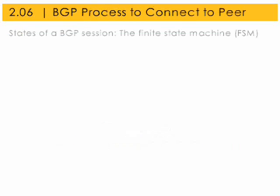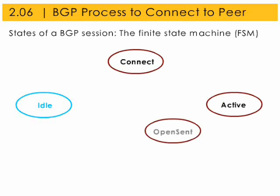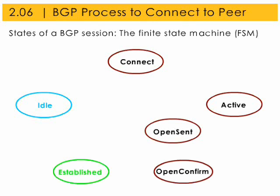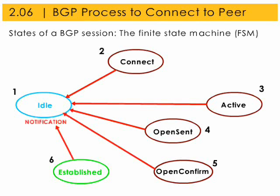In order to connect to a peer, BGP uses a simple finite state machine that consists of six states of a BGP session. These six states are idle, connect, active, open sent, open confirm, and established. This illustration shows the six session states a BGP peer passes through as it makes decisions in its operations with other BGP peers.